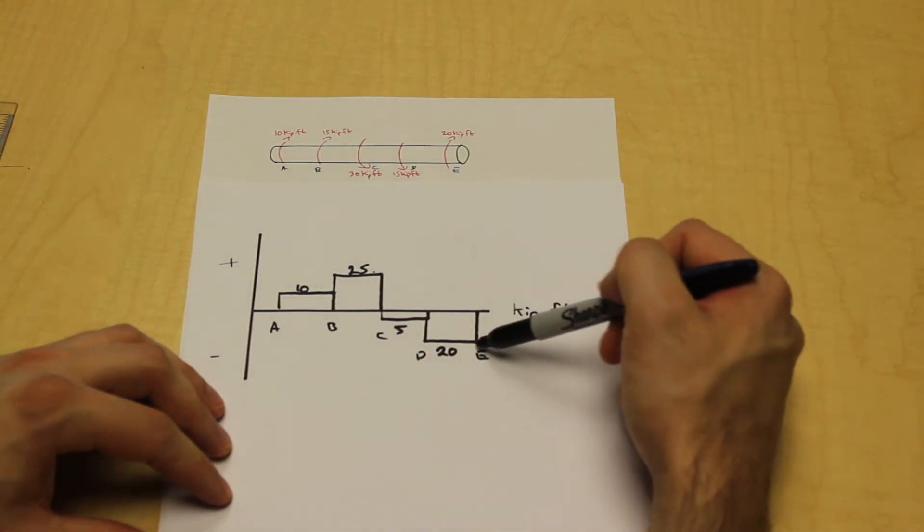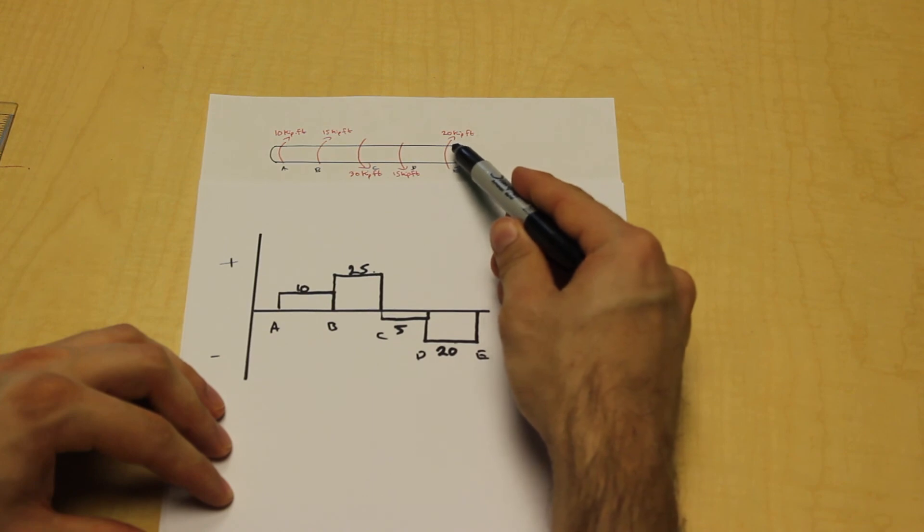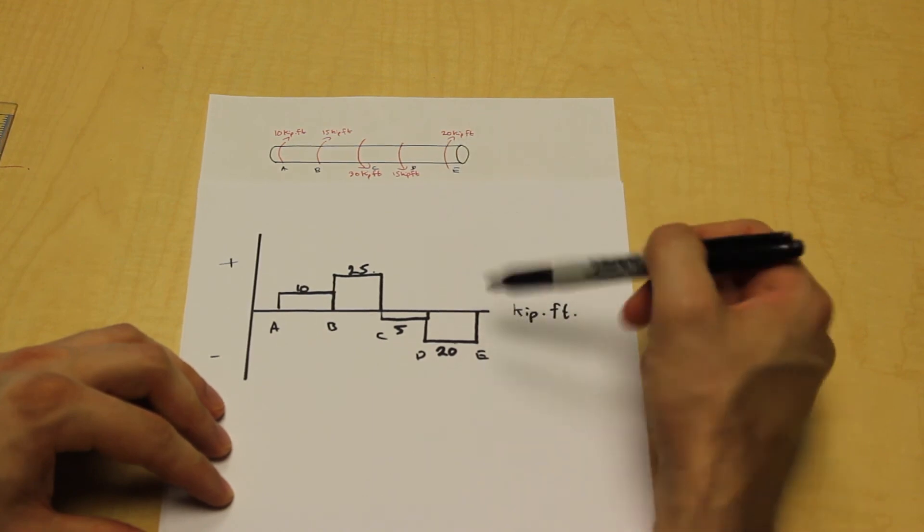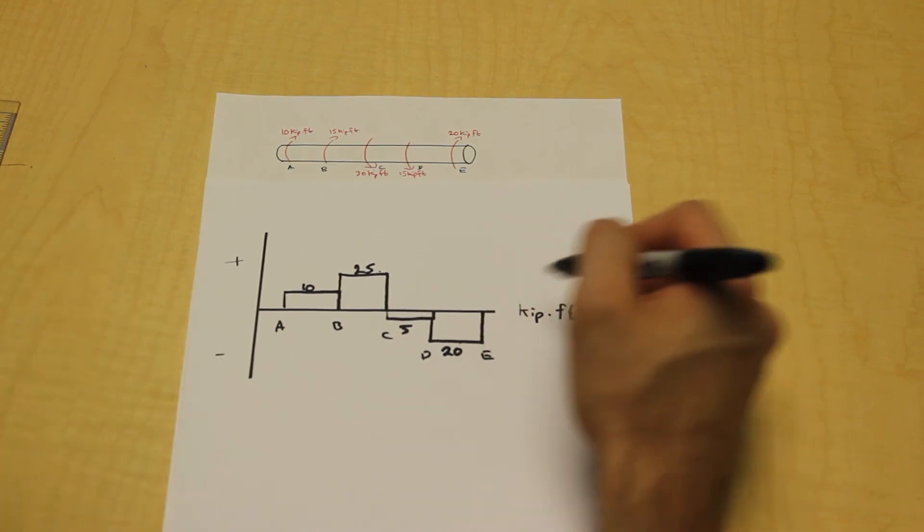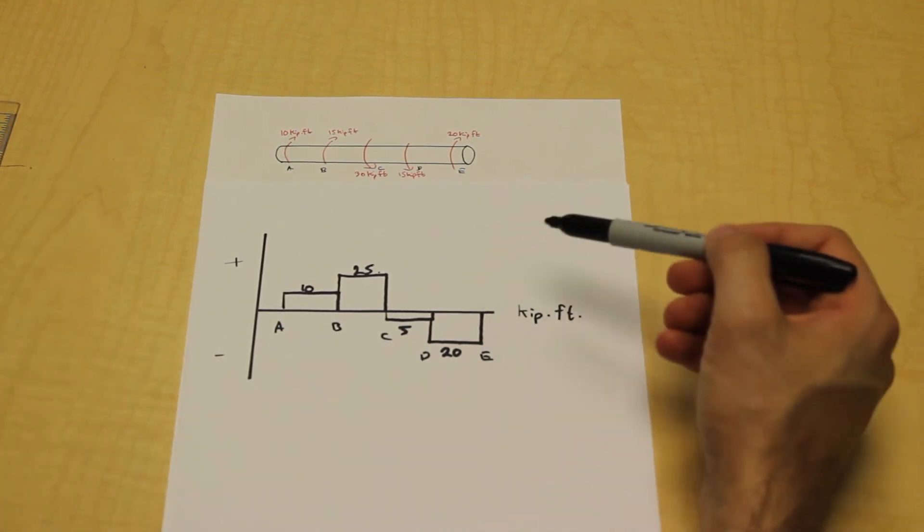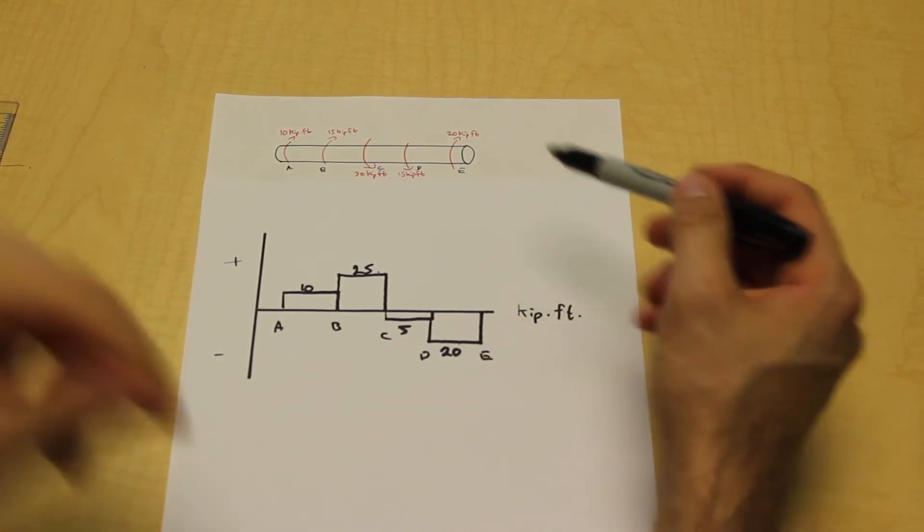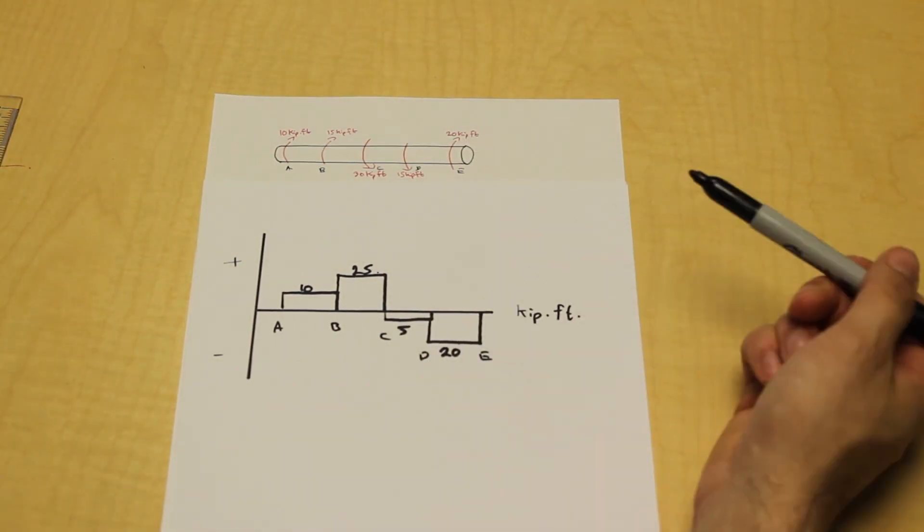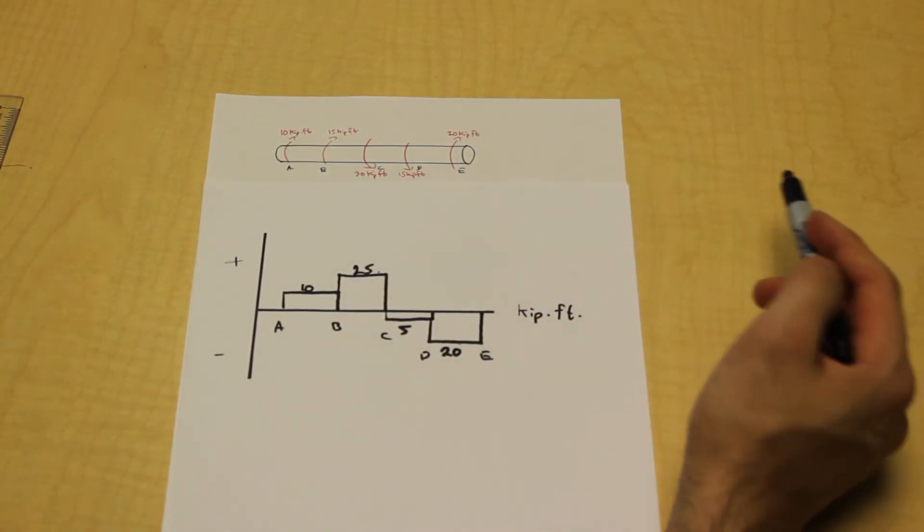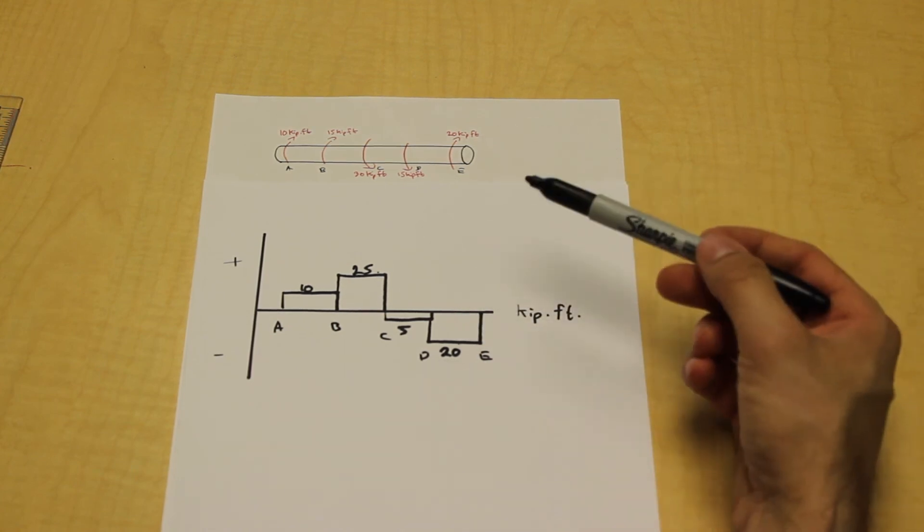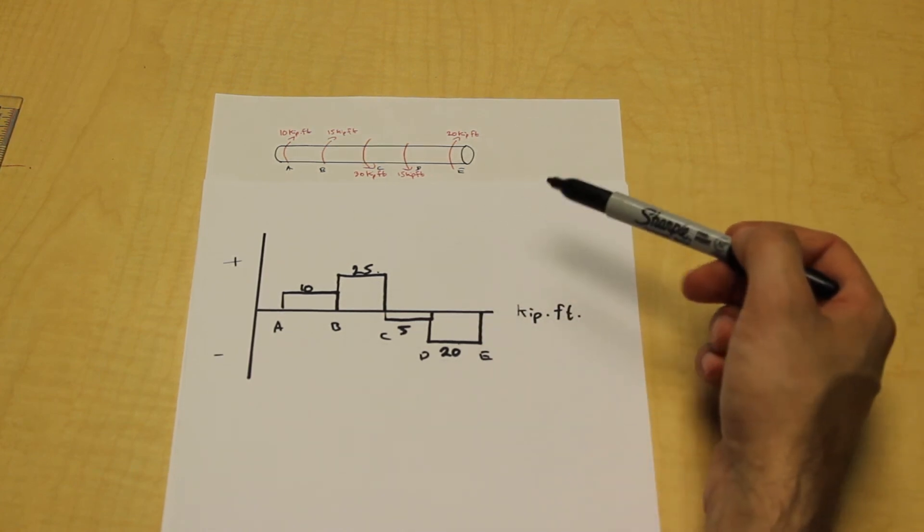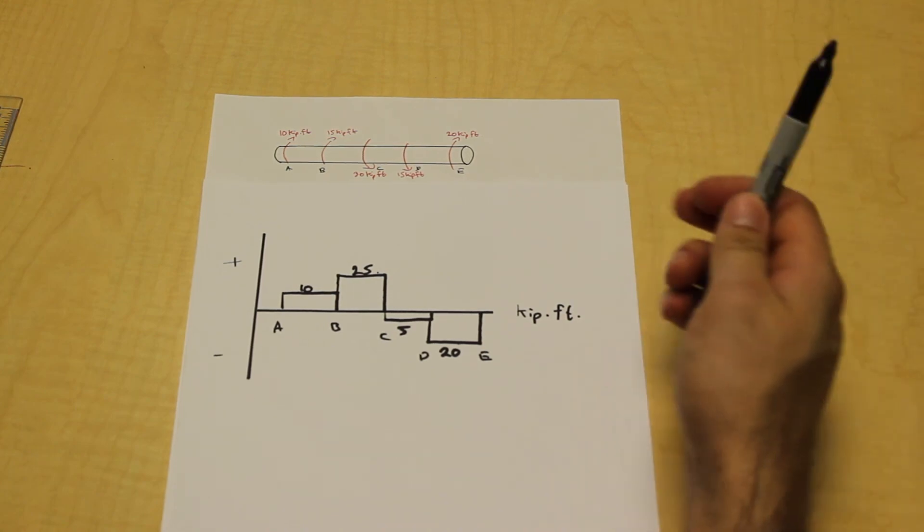Let's label our points down. Finally, we have, we're at negative 20, we go to E. There's a positive 20 kip-feet torque here, goes right back to zero. That's also one thing that you can use to check whether or not your question is correct, if the torque diagram goes back to zero or not. It always has to go back to zero. There's no exceptions. If it's not going back to zero, you made a mistake somewhere, so it's a nice easy way to double check your answer. Thanks for watching guys.